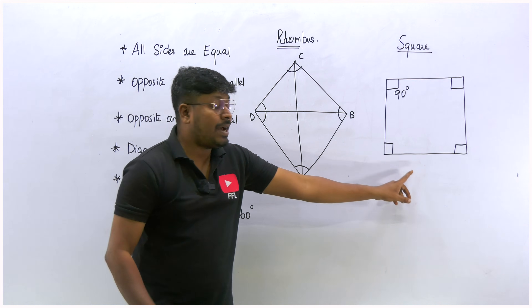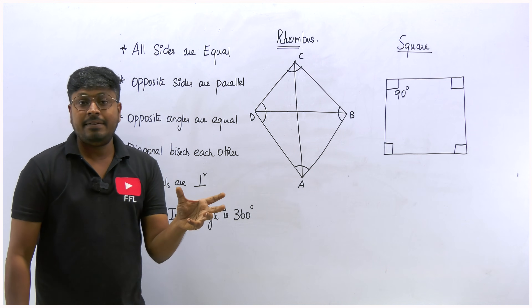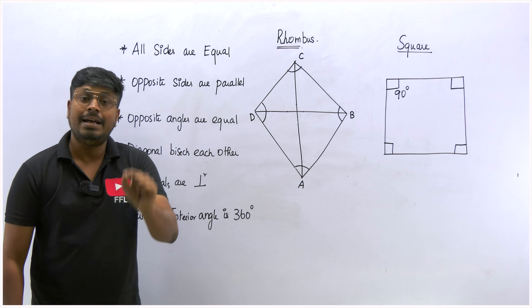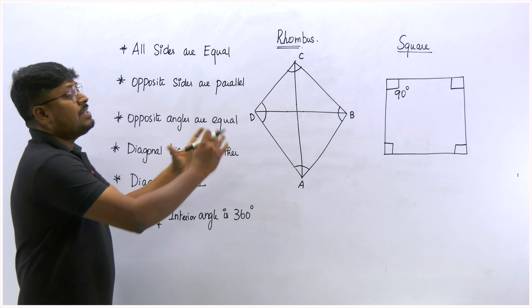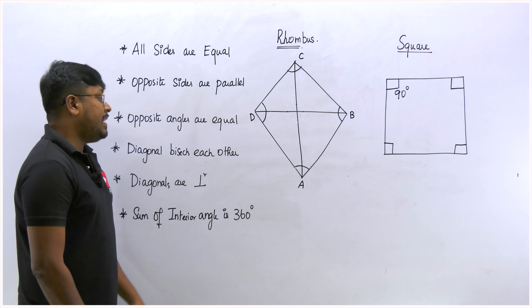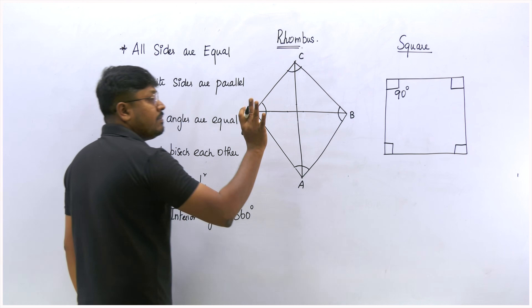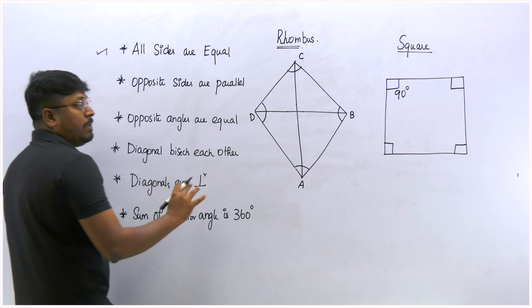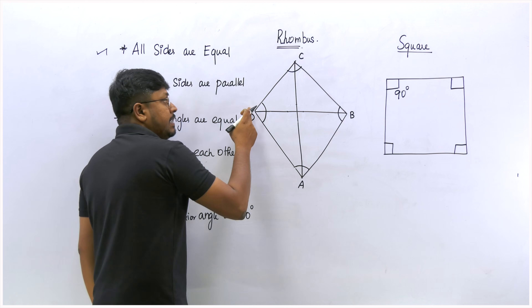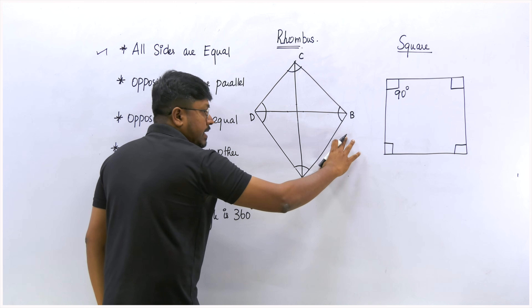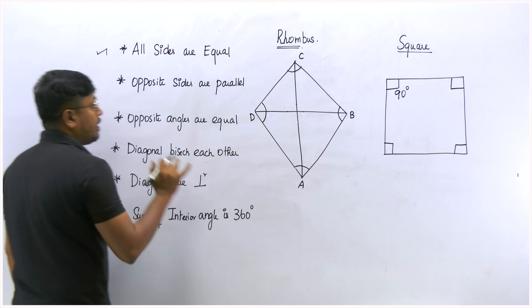Because perimeter of a square is 4A and perimeter of a rhombus is also 4A, since all sides are equal. The only difference is based on the angle. Now let's learn the important properties. First property: all the sides are equal. All the sides of the rhombus will be equal. Point number 2: opposite sides are parallel. For example, we have four sides. When you take AD, this side will be parallel to CB. Similarly, DC is one side and this side is parallel to AB. So all opposite sides are parallel. This side and this side will be parallel, and this side and this side will be parallel.